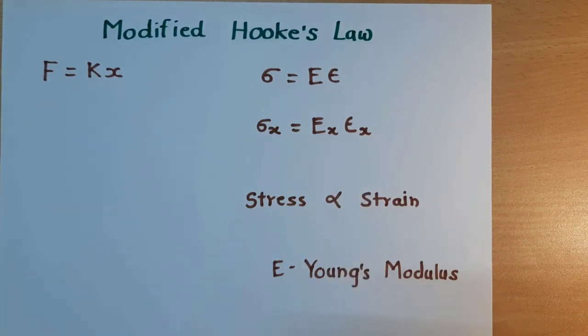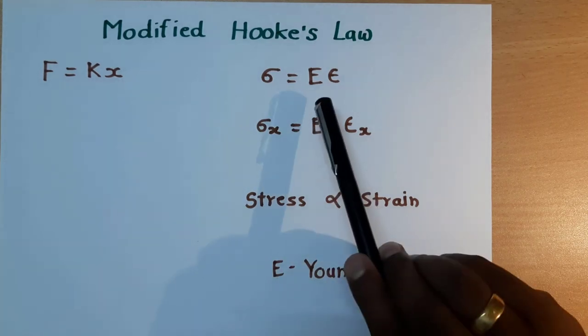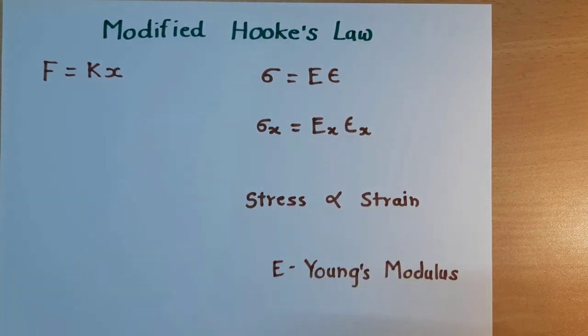So this is the modified Hooke's law: stress is directly proportional to the strain where E is the Young's modulus, which is used as a proportionality constant. This is the basic equation which we use in FEA, where we will convert all forms of a model into this form of equation.